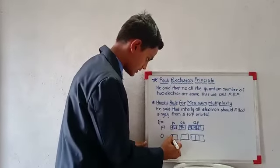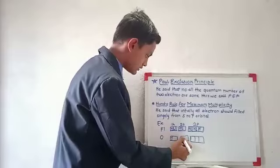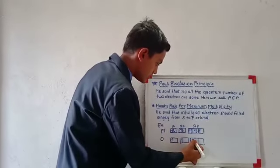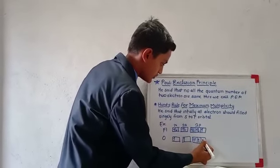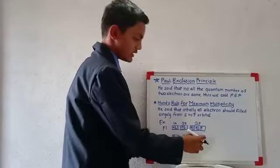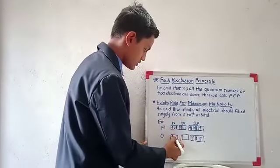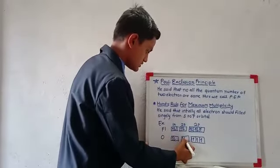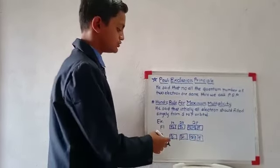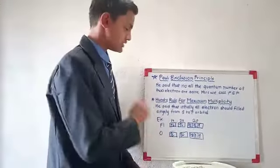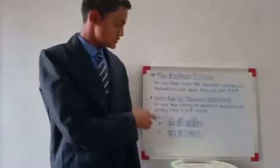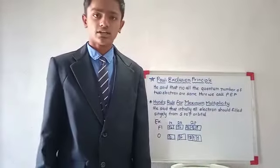Then one, then two, then three, then four, then five. Now we have to start from this—six, seven, and eight. Like this, initially we have to fill singly. So this was Hund's Rule for Maximum Multiplicity. Thank you.